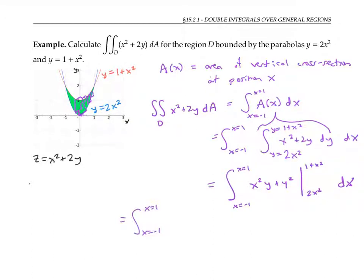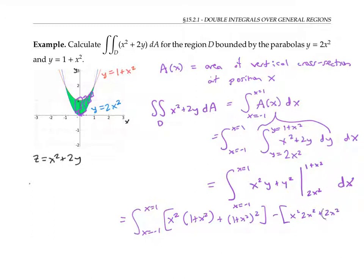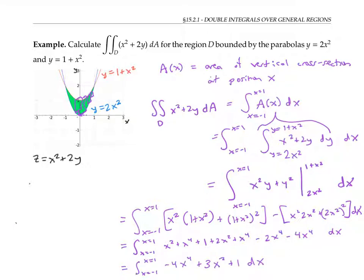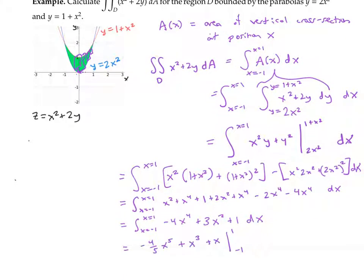Plugging in my bounds of integration, I get x squared times one plus x squared plugged in for y, plus one plus x squared squared — that whole thing corresponds to plugging in the first bound of integration. Then I plug in the second bound: x squared times two x squared plus two x squared squared, all integrated with respect to x. After simplifying, we're in a position to integrate, and that integral evaluates to 12 fifths.